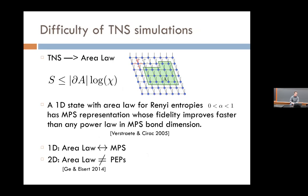For tensor network simulations, if you have an MPS or PEPS in a Cartesian geometry, the tensor network implies an area law and the coefficient is bounded by the log of bond dimension. It's natural to ask whether the arrow goes the other way. There's nice work by Frank showing that in 1D, if you can show an area law not just for von Neumann entropy but for all alpha Rényi entropies less than one, then you can show there's an MPS representation whose fidelity improves faster than any power law.